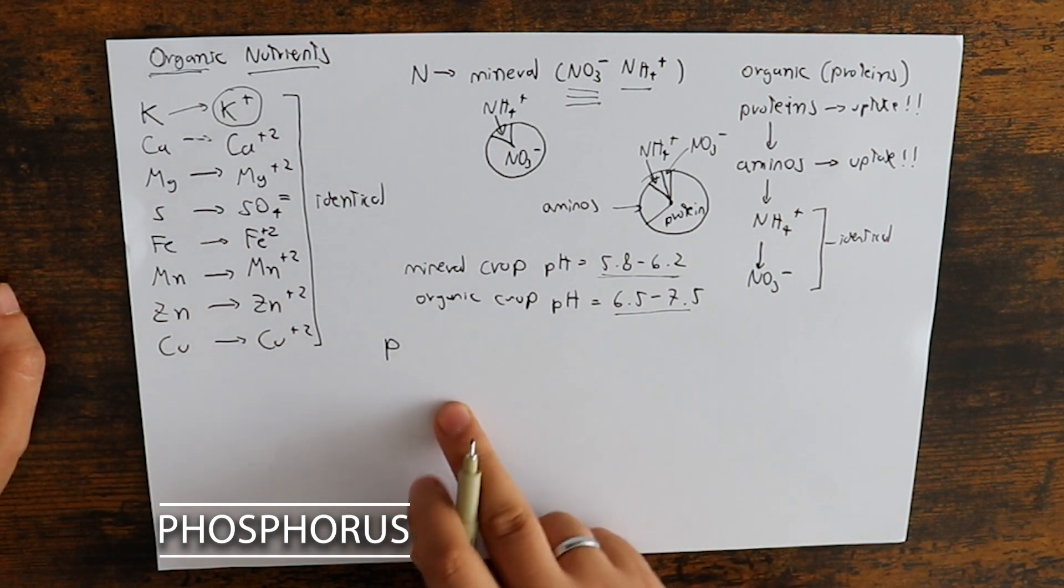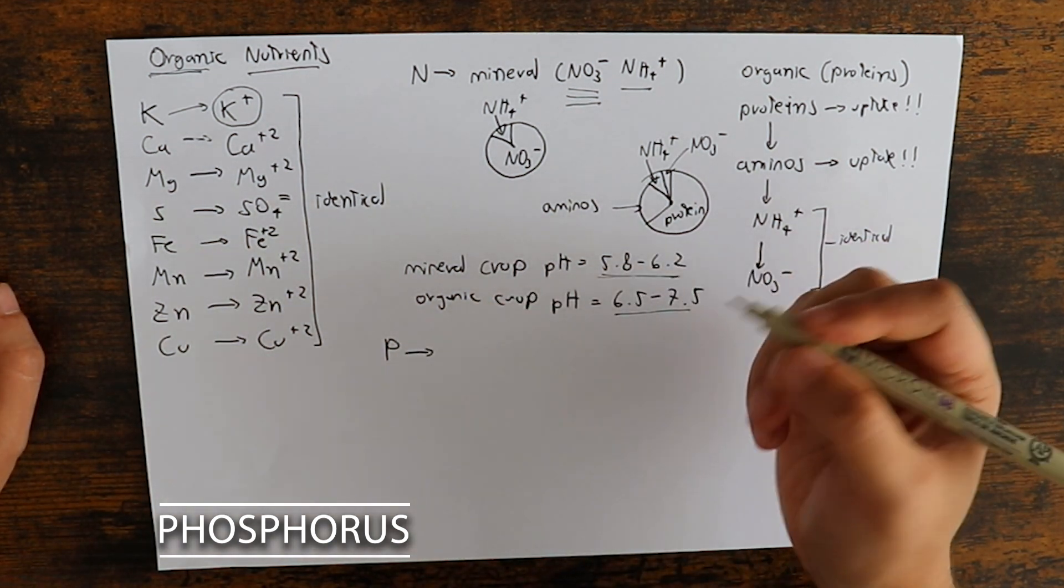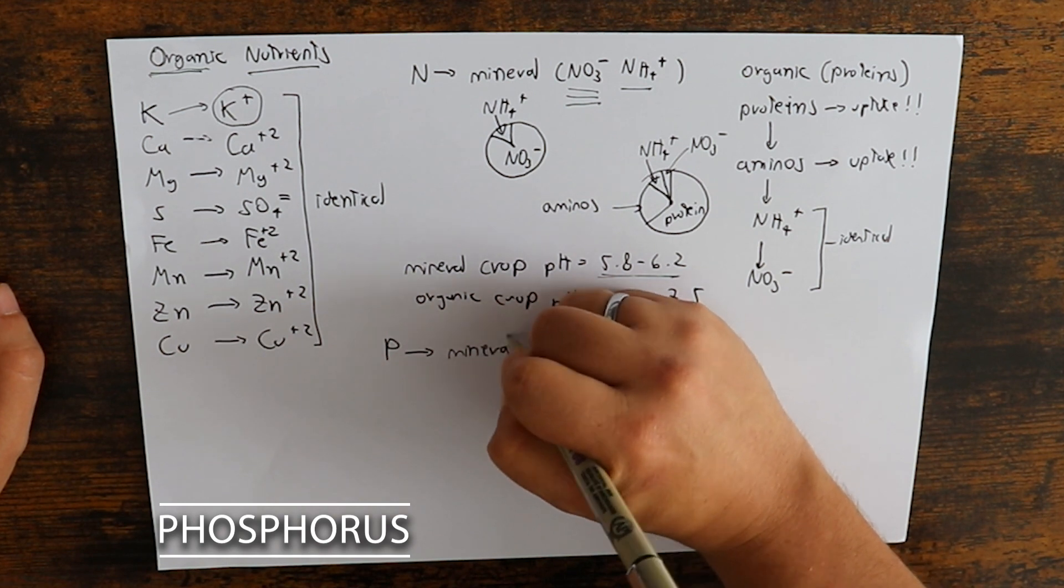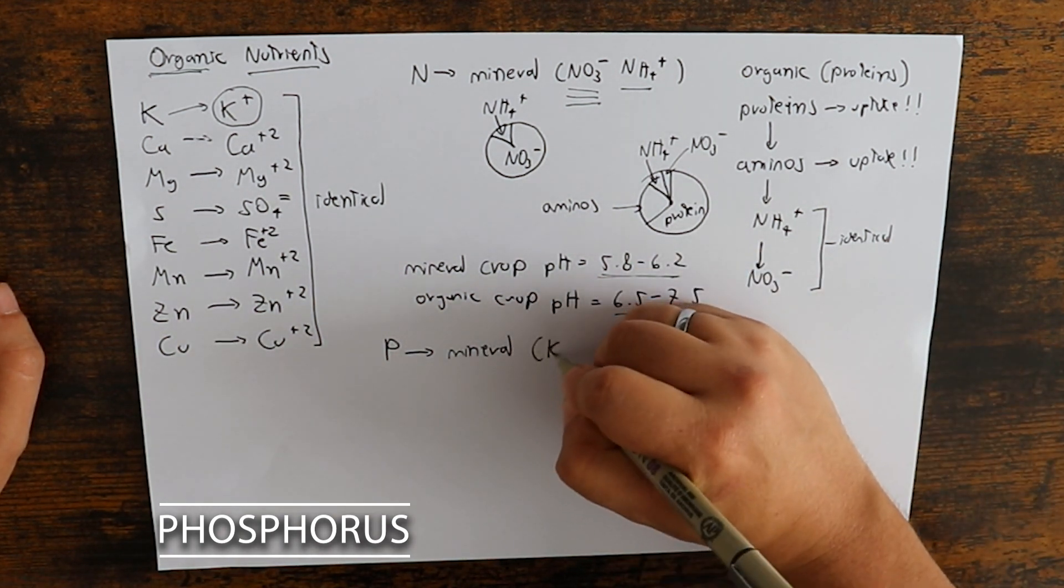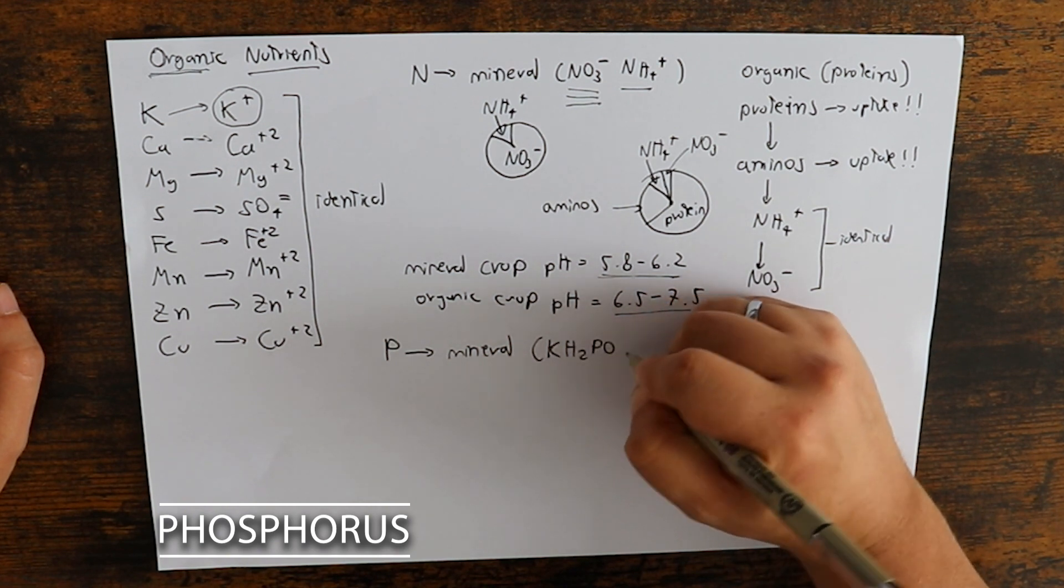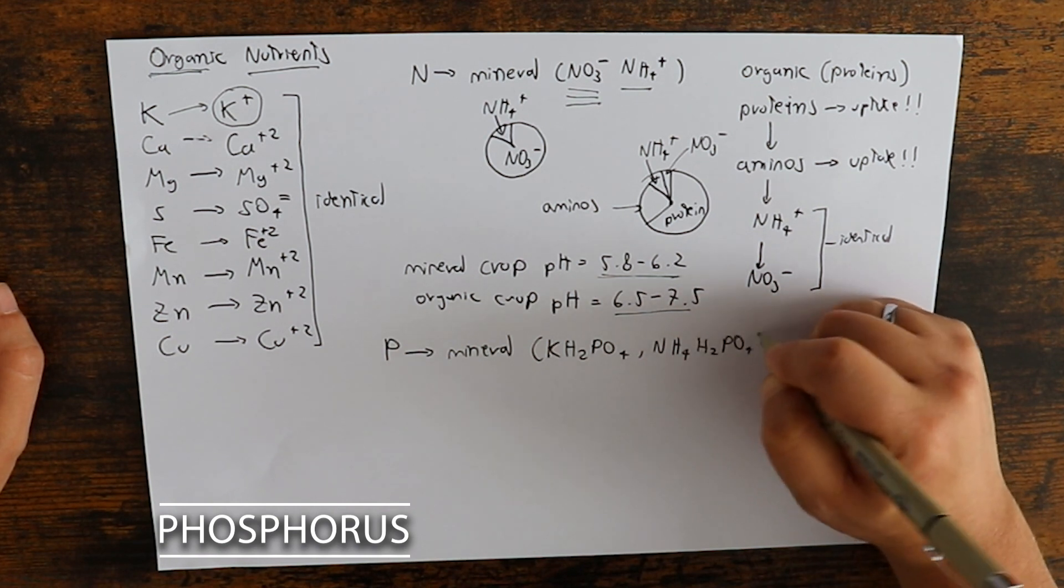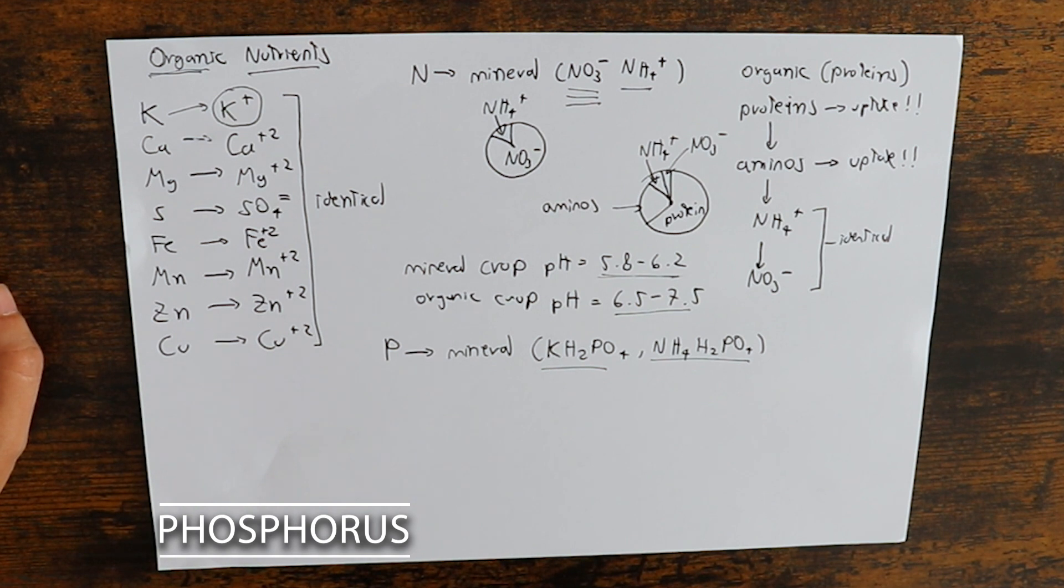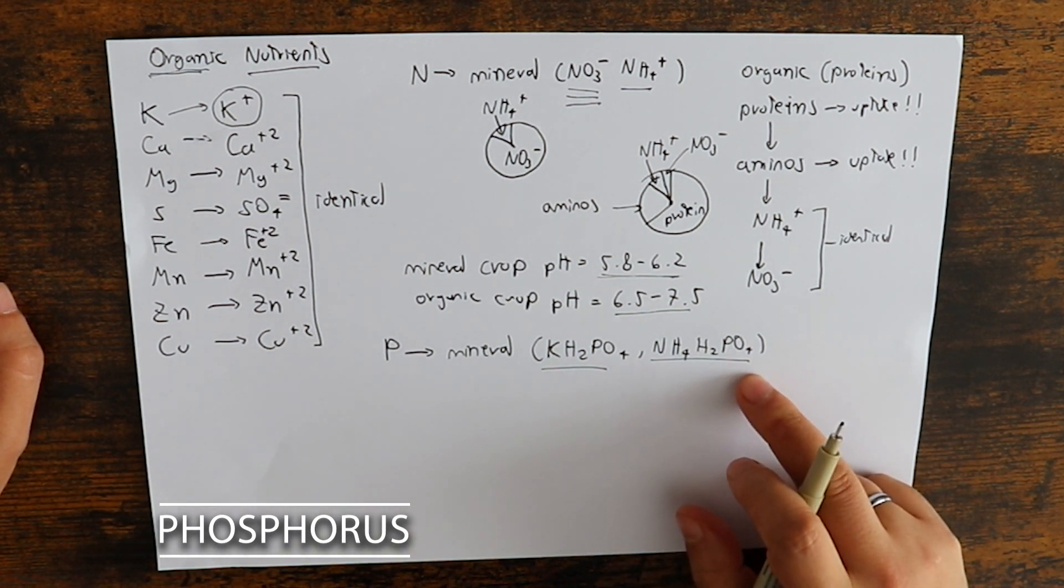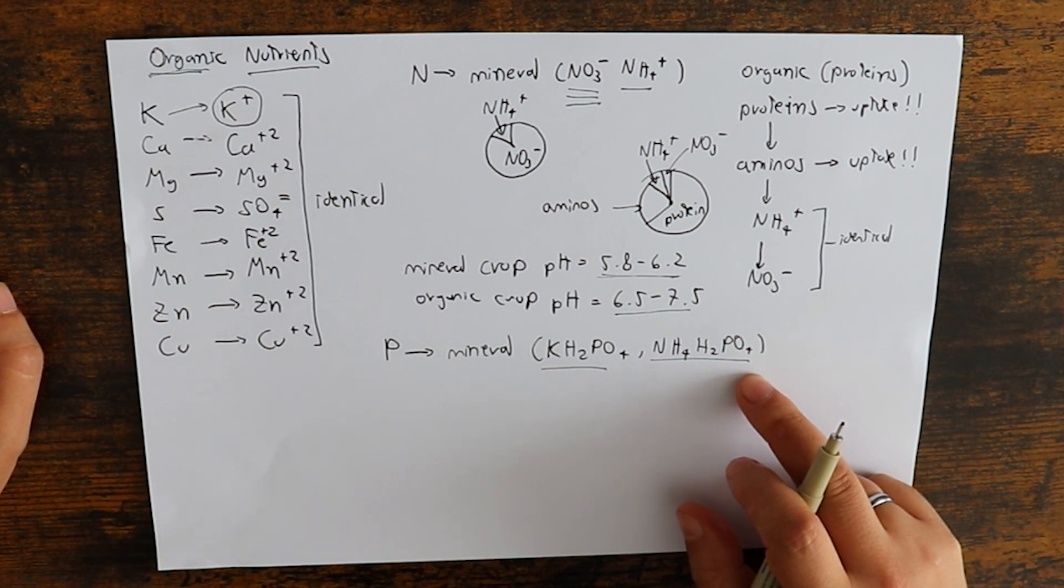Now the other nutrient that we're missing is phosphorus. Now in phosphorus we have in mineral hydroponics we generally use monopotassium phosphate, KH2PO4 or ammonium phosphate as our main sources of phosphorus because these are soluble, readily available, cheap, and so we usually pick these two up. However, these two do not exist in nature as minerals because they are too soluble. And there are very, very, very few sources of soluble phosphorus that exist in nature as minerals.